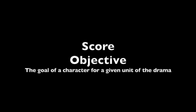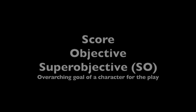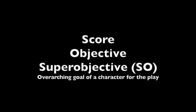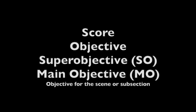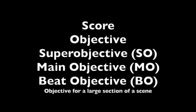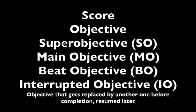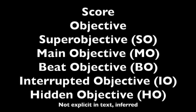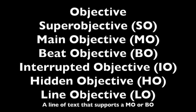The objective is the goal of a character for a given unit of the drama. The super objective is the overarching goal of the character for the play, or in this case, opera. The main objective is the objective for the scene, or a subsection of the scene. The beat objective is the objective for a large section of a scene — for example, for one conversation. An interrupted objective is an objective that gets replaced by another one before completion, often resumed later. A hidden objective is one that's not explicit in the text, but is inferred. A line objective is a line of text that supports an MO (main objective) or a BO (beat objective).